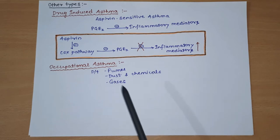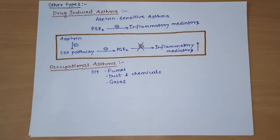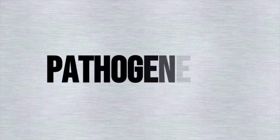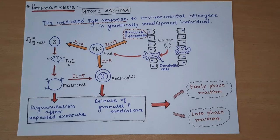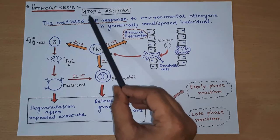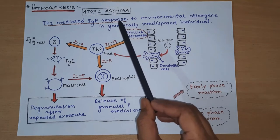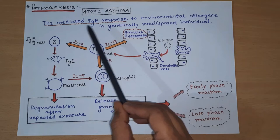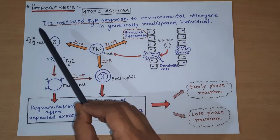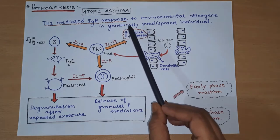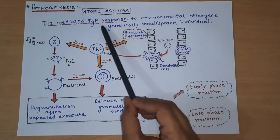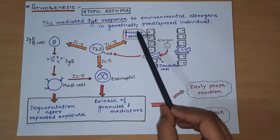So these are the types of Bronchial Asthma. Now coming to the pathogenesis of asthma - in one line, we can summarize the pathogenesis of asthma as: it is a TH2-mediated IgE response to environmental allergens in genetically predisposed individuals.